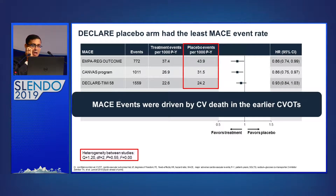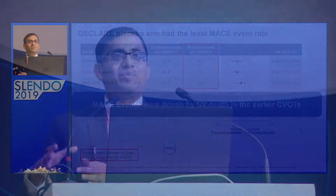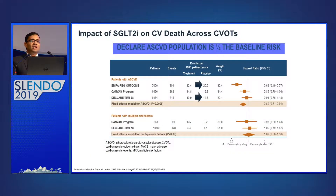Cardiovascular death was not reduced in DECLARE because — as is obvious — patients with CKD are at risk of cardiovascular death from both ischemic causes and heart failure hospitalizations. The DECLARE population was healthier regarding renal endpoints: eGFR was much better in DECLARE patients compared to CANVAS or EMPA-REG. This explains the difference in cardiovascular death outcomes.